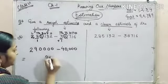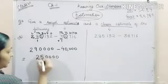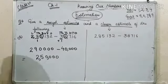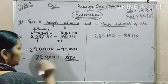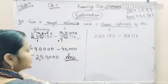Now, subtracting both the numbers, we get 2,50,000 which is our answer. So this is the rough estimation of this difference.